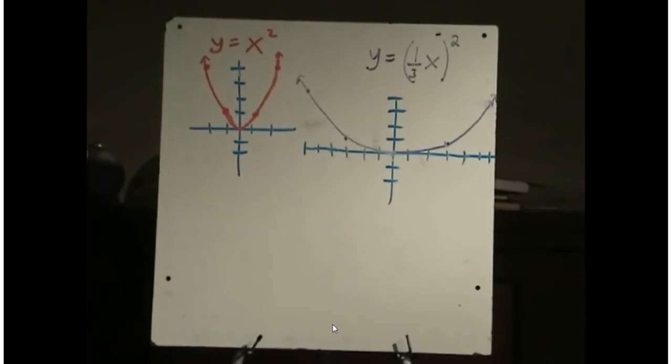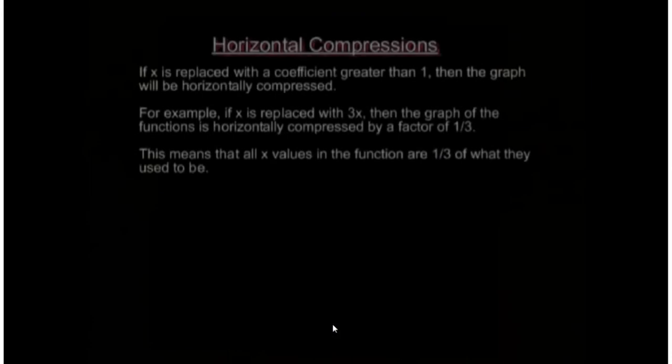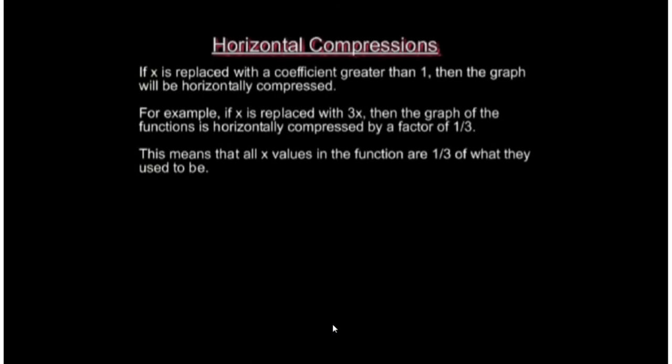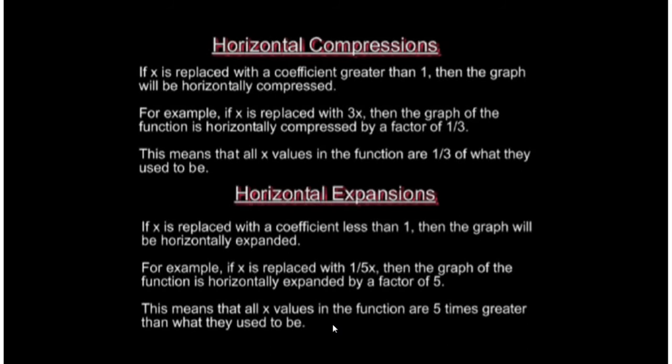Let's review horizontal expansions and compressions. If x is replaced with a coefficient greater than 1, the graph will be horizontally compressed. For example, if x is replaced with 3x, the graph is horizontally compressed by a factor of one-third, meaning all x values are one-third of what they used to be. If x is replaced with a coefficient less than 1, the graph will be horizontally expanded. For example, if x is replaced with one-fifth x, the graph is horizontally expanded by a factor of 5, meaning all x values are 5 times greater than before.